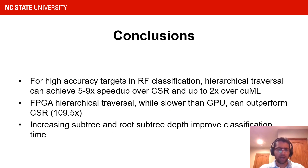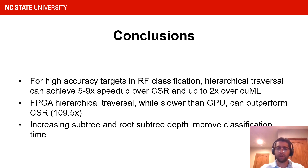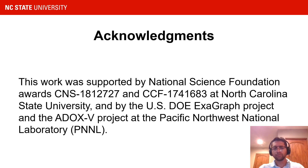In conclusion, for higher accuracy targets in RF classification, the hierarchical traversal format and kernel can achieve five to nine times speedup over CSR and up to two times speedup over QML. FPGA hierarchical traversal, while slower than GPU, can outperform CSR by up to 109.5 times. Increasing subtree and root subtree depth improves classification time. Lastly, I'd like to thank the National Science Foundation awards listed on this slide, as well as the U.S. Department of Energy Exegraph Project and ADOX-5 Project at PNNL.